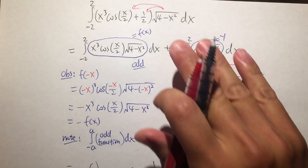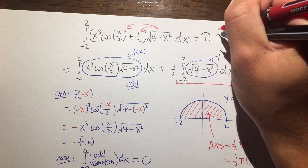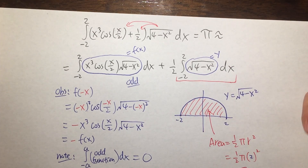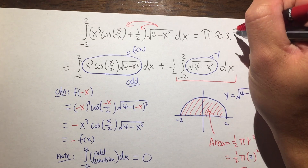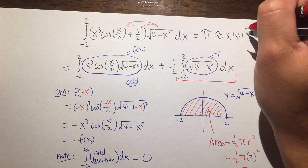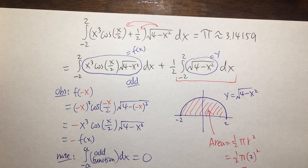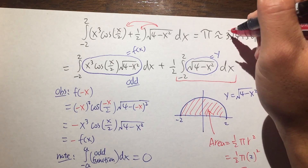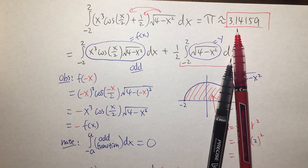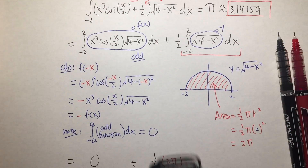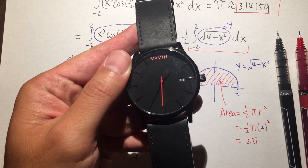The whole integral is zero plus one half times 2 pi, which is just pi. Because we need the first six digits for the Wi-Fi password, pi is 3.141592 and so on — that's our Wi-Fi password! Hopefully you guys liked this video. By the way, it is currently 1:35 a.m.